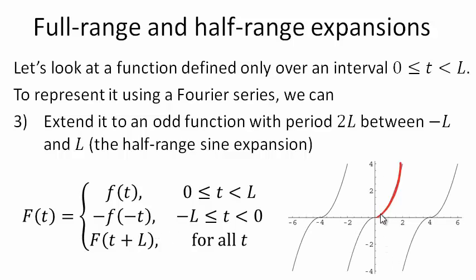There's our example again. So, this branch here for t squared, if it's extended to an odd function, we'll just go down here. And, we simply find the Fourier series of this new function.